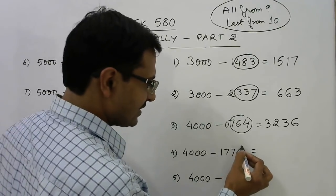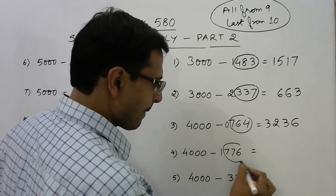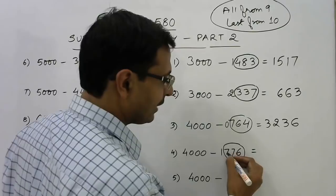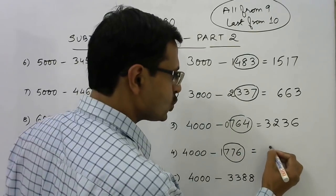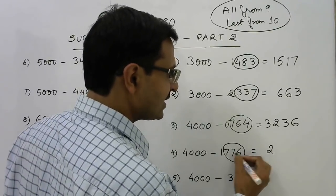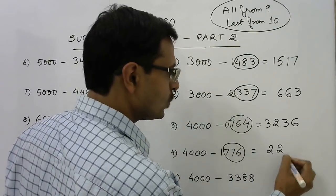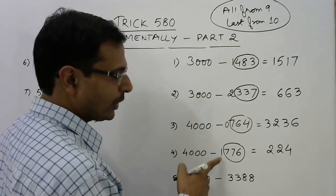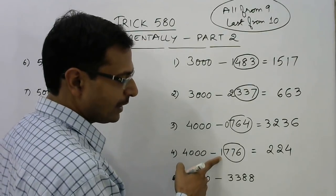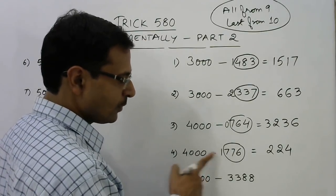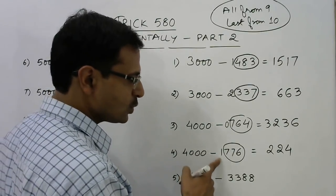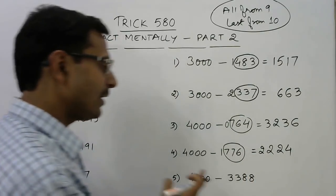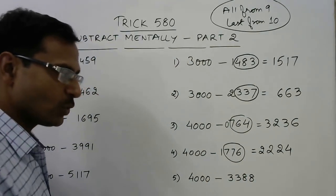Next example: 4000 minus 1776. The last three digits are 776. Apply 'all from 9 and last from 10': 9 minus 7 is 2, 9 minus 7 is 2, 10 minus 6 is 4. Now increase the leading digit 1 by 1 to get 2, and 4 minus 2 is 2. So 2224 is the difference.